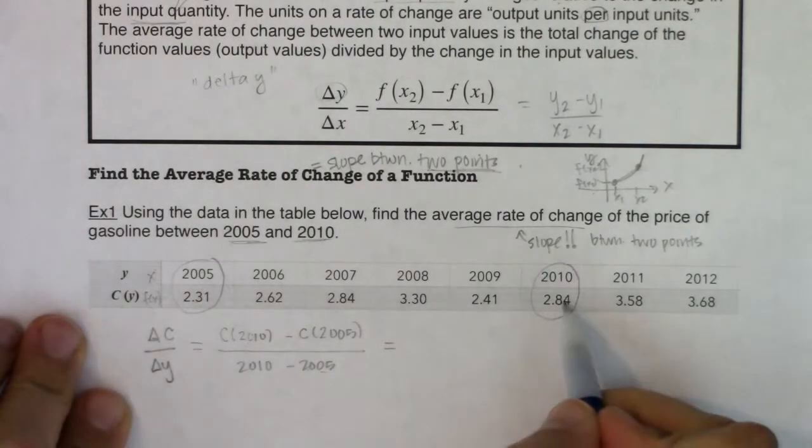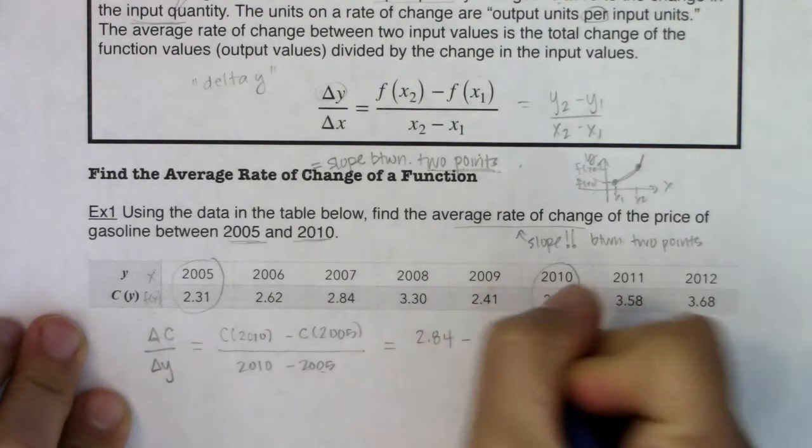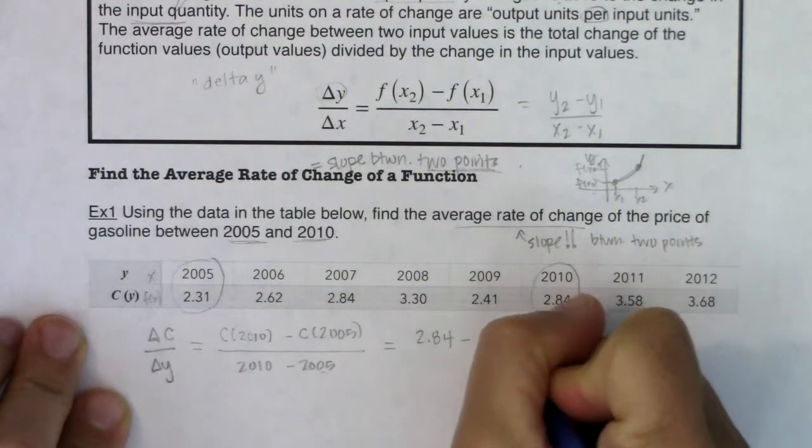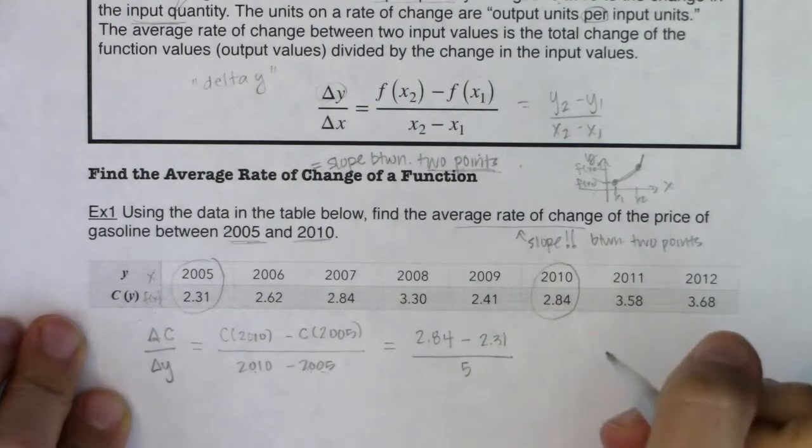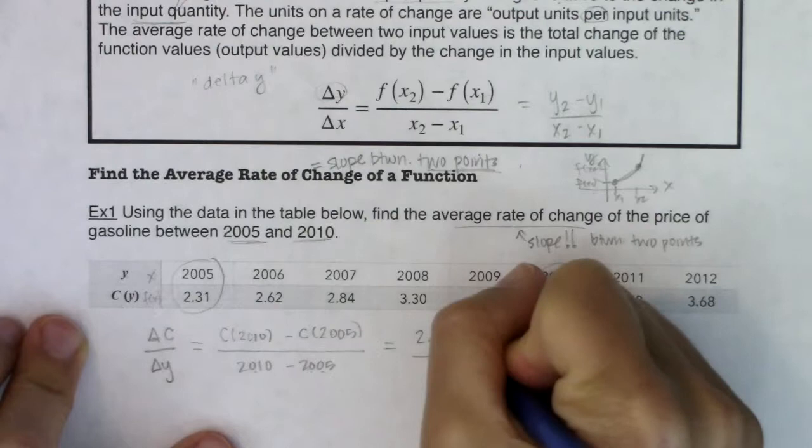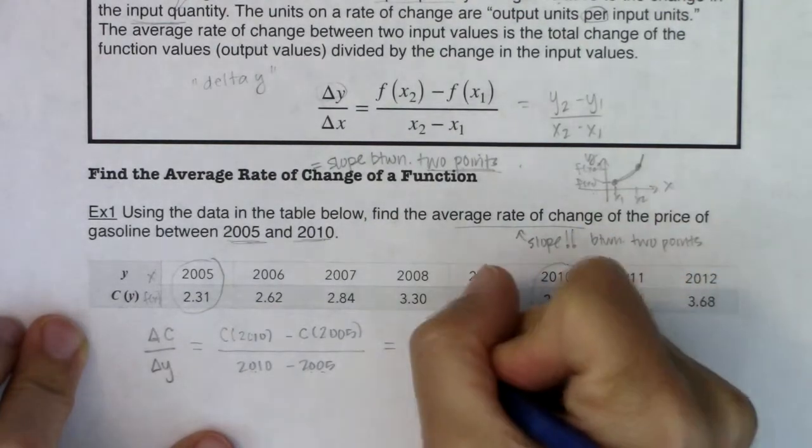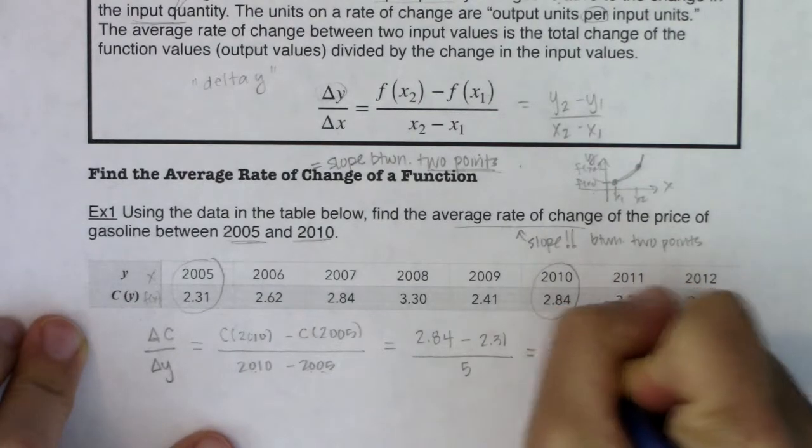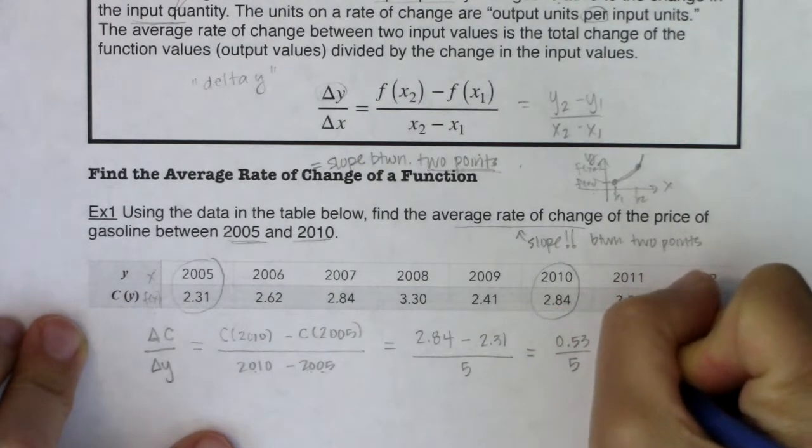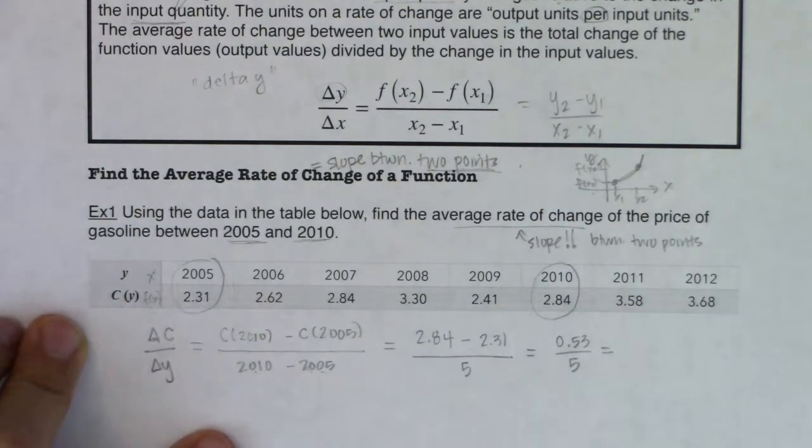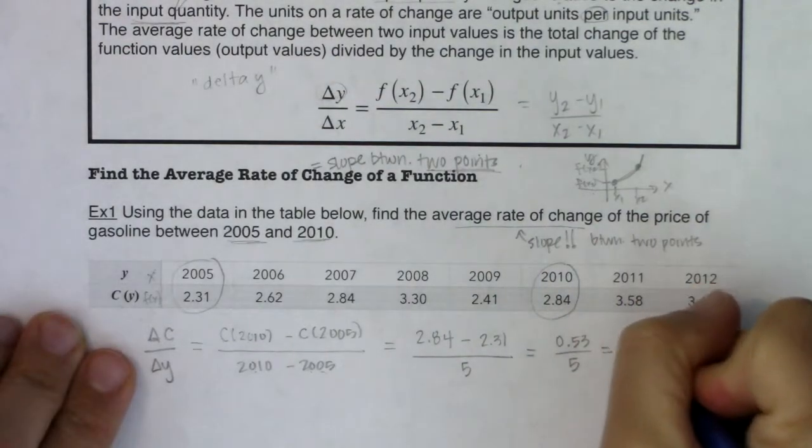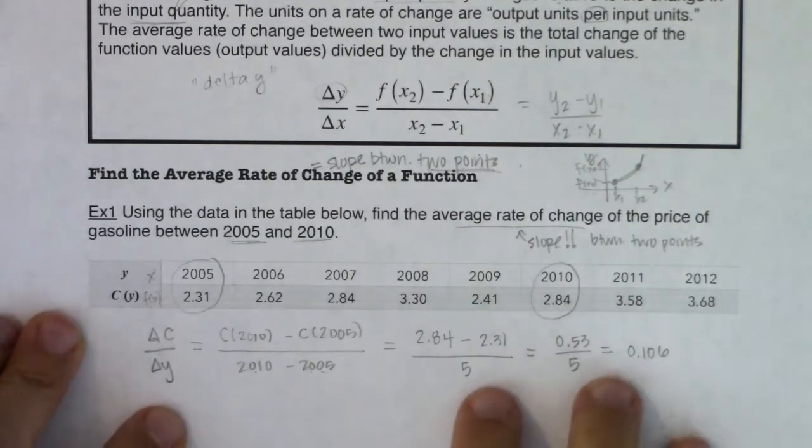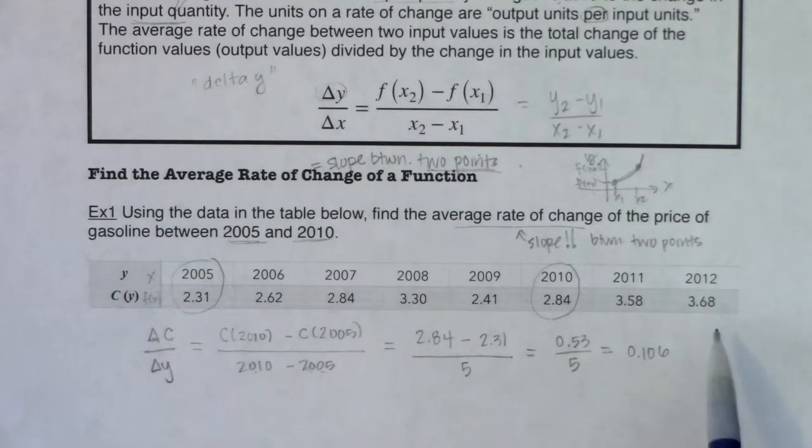So let's see, what was the cost in 2010? It looks like it was $2.84 a gallon. And in 2005, it was $2.31 a gallon. And then 2010 minus 2005 is five. So as I'm looking at this, this difference, I can do that in my head. That's 53 cents over five years. And if I want to write this as a unit ratio, or just as a decimal, 0.53 divided by five, it looks like we have 0.106.